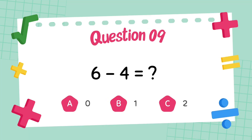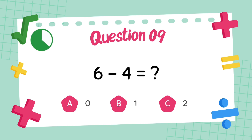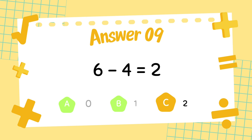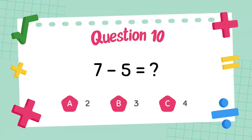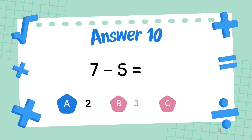What is 6 minus 4? The answer is 2. What is 7 minus 5? The answer is 5.